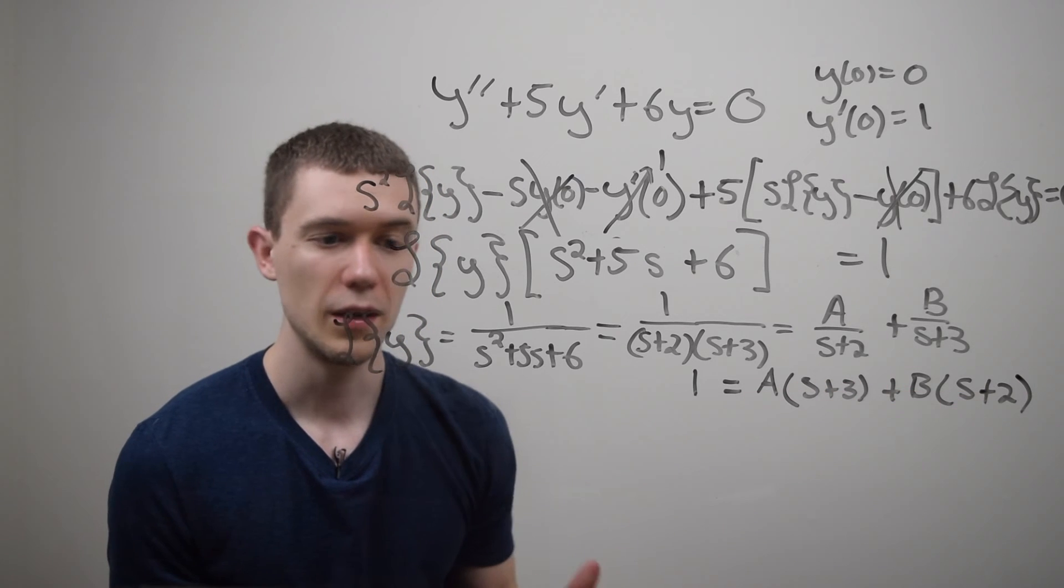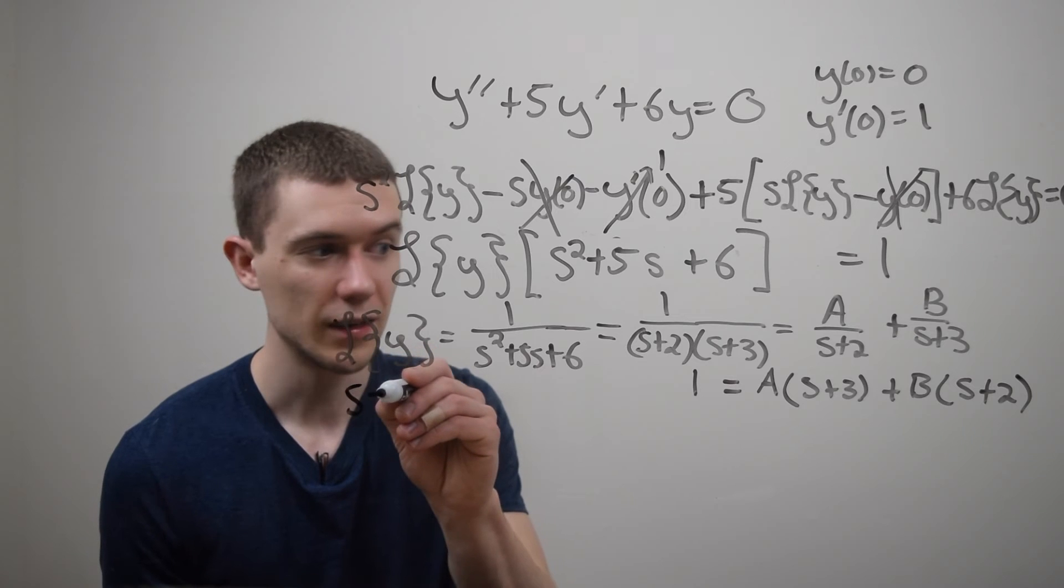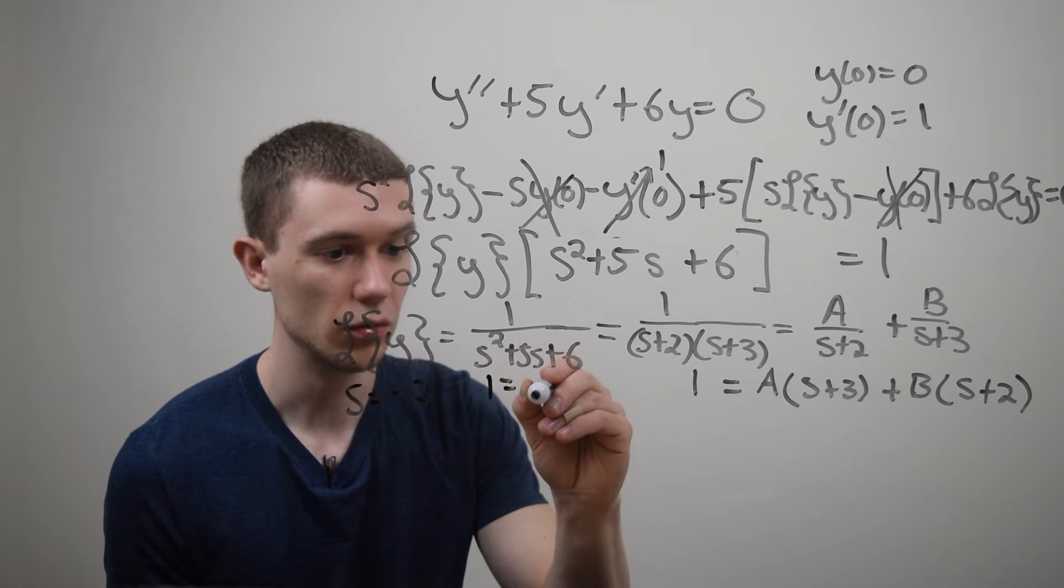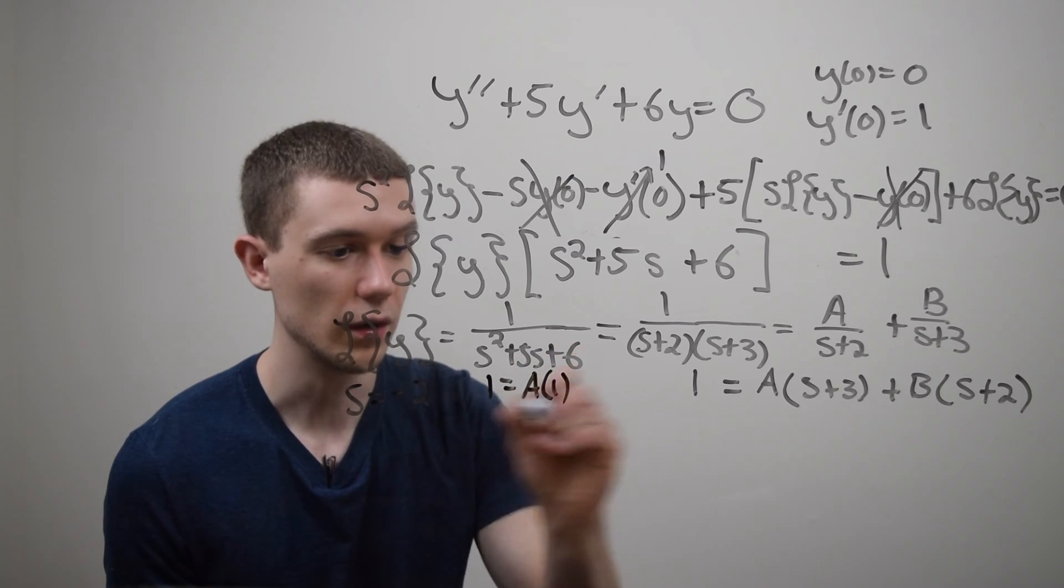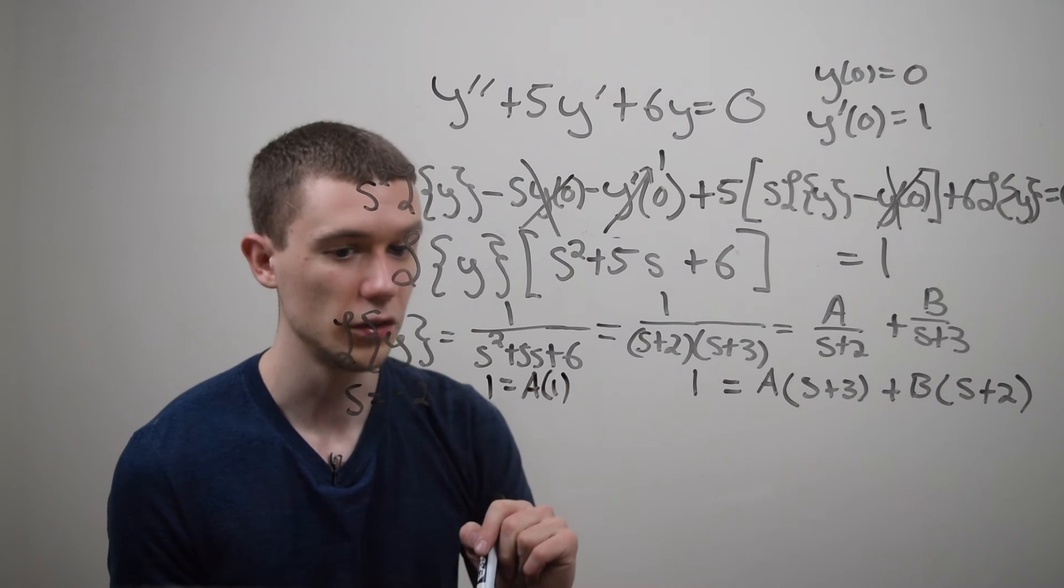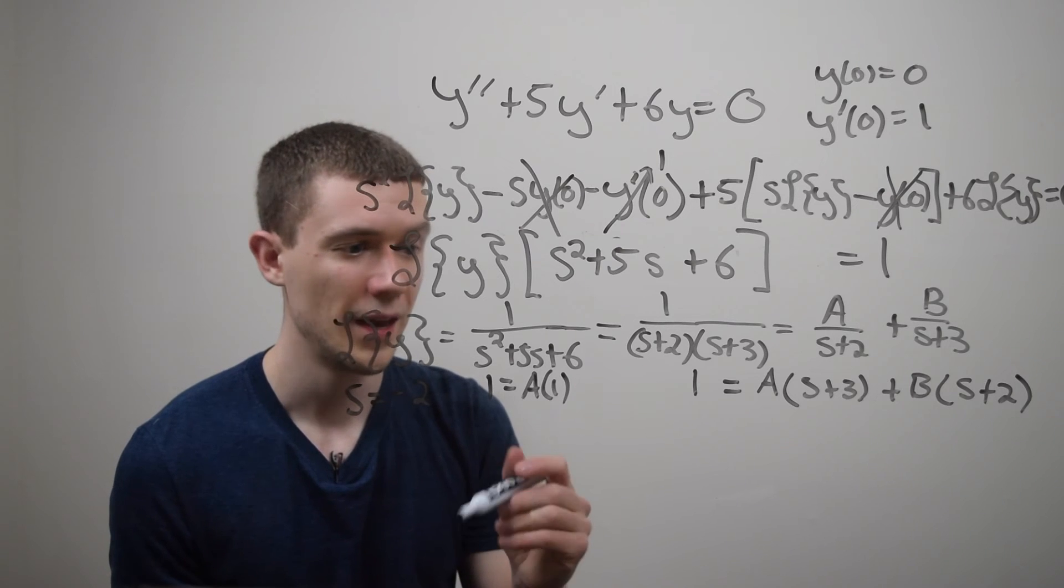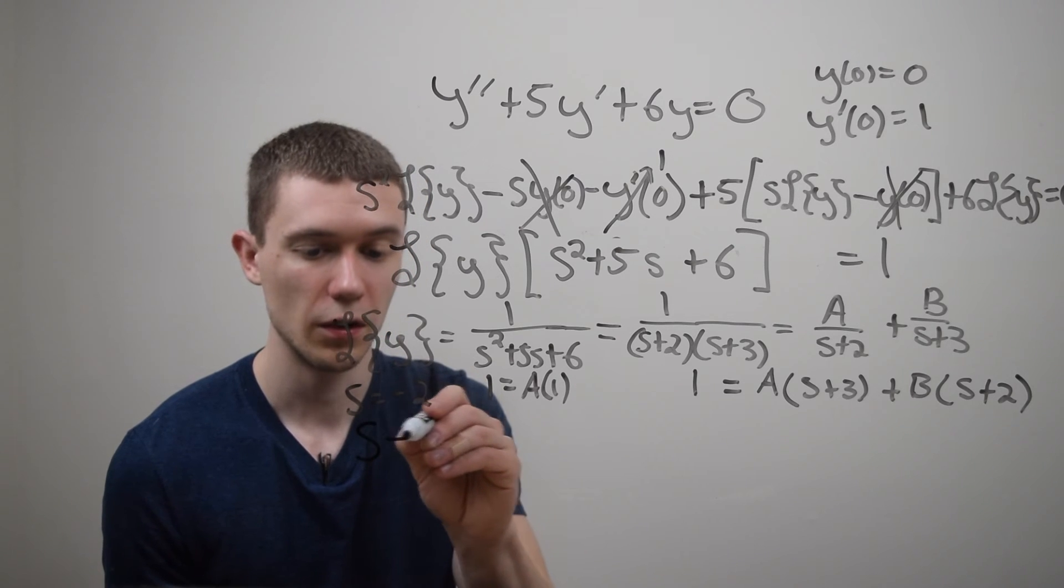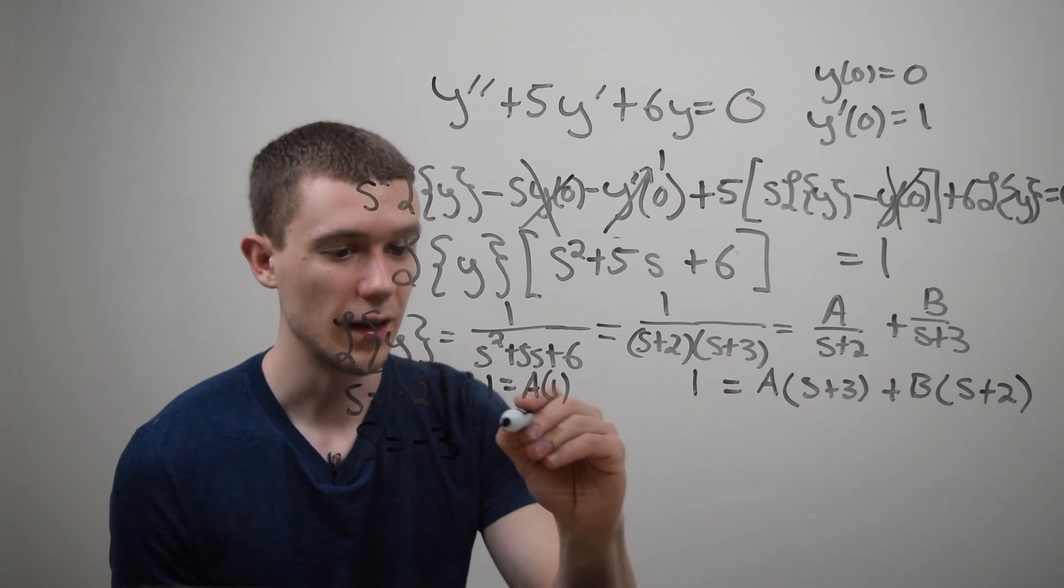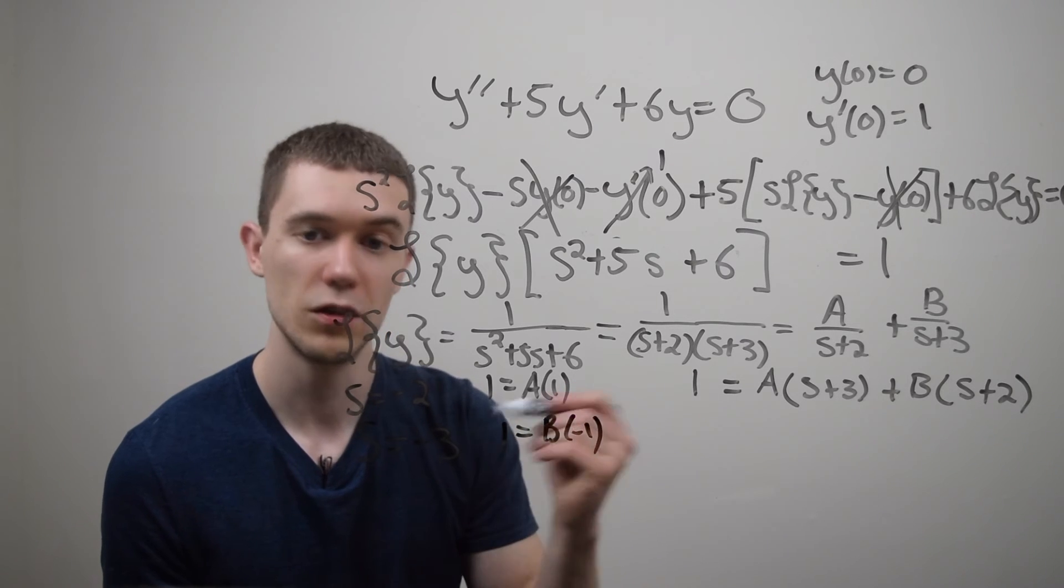The easiest way to solve for a and b here is to substitute values for s. For example, if I were to let s be negative two in this equation, I would have one is equal to a times one. And the b term would drop away because I'd get minus two plus two. Well, 1a is one, so a is one. And very similar, I could let s be minus three and the a term would drop away. And I'd have one is equal to b times minus one. And so b is minus one.